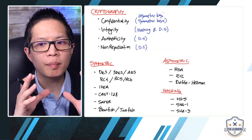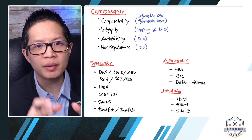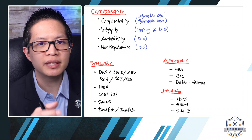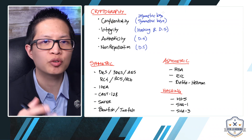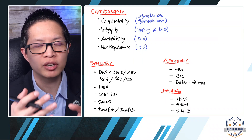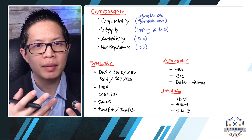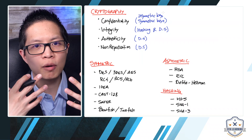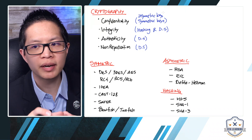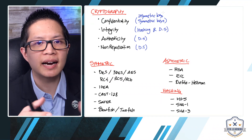Integrity means that the message that was sent is what was received. If I send a message to John, John is receiving the same message. How does John know he's receiving the same message? Through cryptography tools like hashing and digital signatures, John is able to know that the message is complete and accurate and wasn't changed in between.